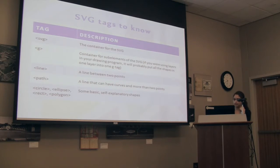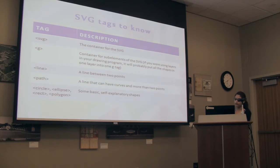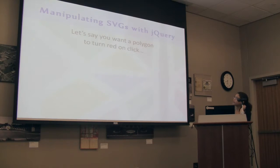Some tags to get to know that are pretty common: the entire SVG is contained in the svg tag. You might see g tags, which are containers for sub-elements in the SVG. You'll often see these if you're using software to make your graphic — basically, each layer's shapes will be put into one g tag for organizational purposes. Then you'll have lines, paths, circles, rectangles, and polygons, which are pretty self-explanatory.